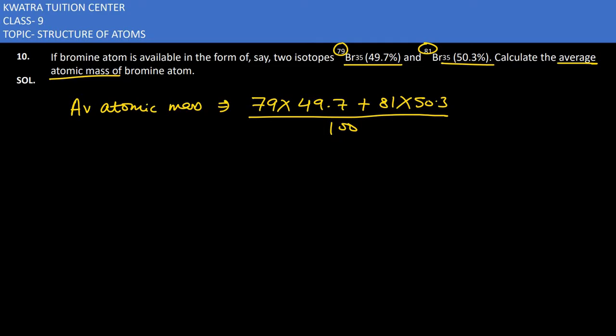Now, why did we multiply 79 and 49.7? Because we had to calculate the average atomic mass. The average is 79. The first one has 79 atomic mass. Multiplying it with the percentage they exist in, 79 multiplied by 49.7 will give you 3926.3.